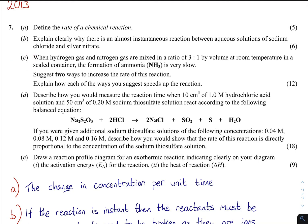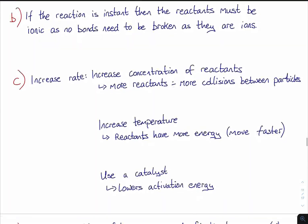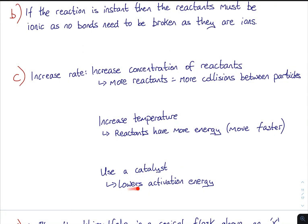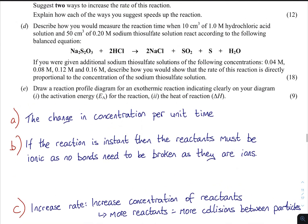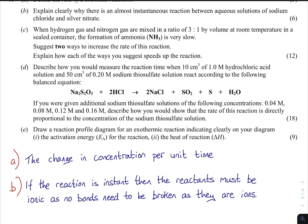You can check this by looking up the electronegativity values to see if they're ionic or not. If the reaction is instant then the reactants must be ionic as no bonds need to be broken since they're already ions. It's a good thing to note - previous questions have come up asking what's the difference between ionic and covalent bonding in terms of rates.